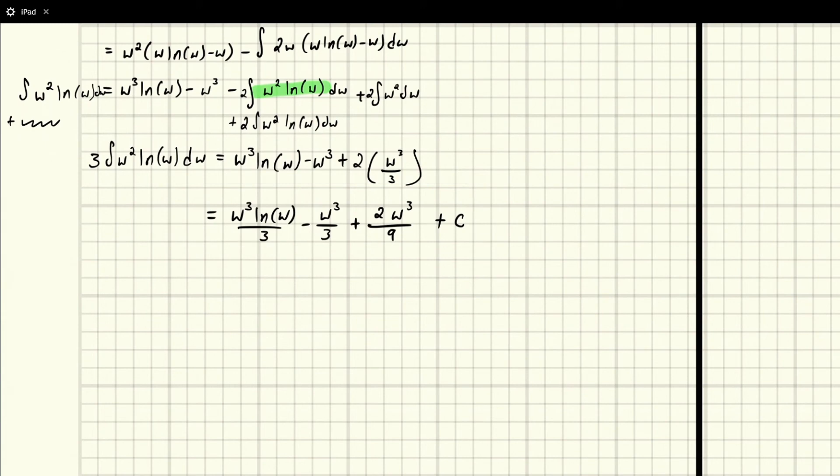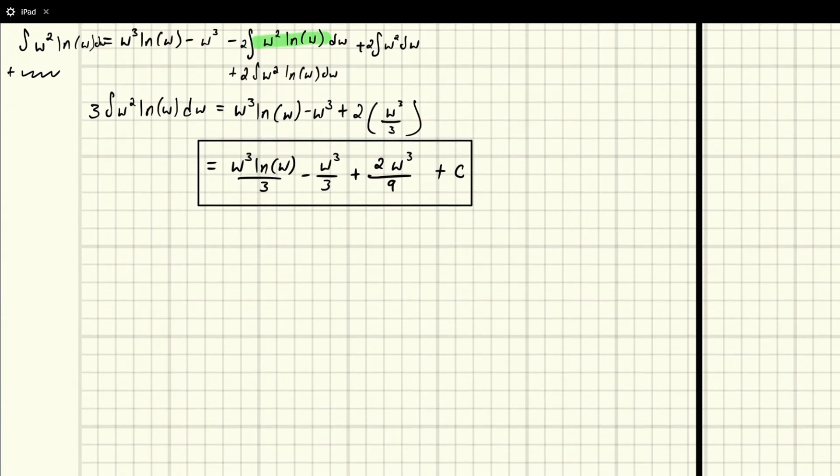Now, there is something we can do to this to actually make it simpler. If we get a common denominator here, we can also simplify this. So if we multiply by 3, we'll get a 9 here and a 3 here. And our final answer actually winds up looking a little nicer. We're going to get w cubed times the natural log of w over 3. And then this negative and this positive, right, we've got the same denominator. So we're going to get a 9 on the bottom. 3 minus 2 is 1. So we'll be left with w cubed over 9 plus C. So we actually get an even nicer looking thing if you decide to combine things.